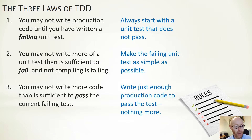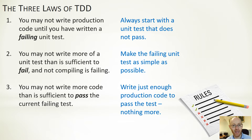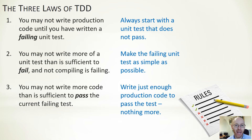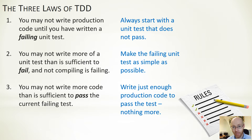The third law is: you may not write more code than is sufficient to pass the currently failing test. Given a failing unit test, you write sufficient code — and nothing more — to pass that test, and that's when you stop. You don't go beyond; just enough to pass the particular test. That is one particular iteration, though there's a refactoring element. Having done that, we repeat the process: come up with another simple unit test, implement just enough functionality to pass it, and repeat.